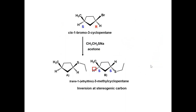Thus the product is trans-1-ethyl thiol-3-methyl cyclopentane. We see that the chiral carbon where the SN2 reaction took place has been inverted.